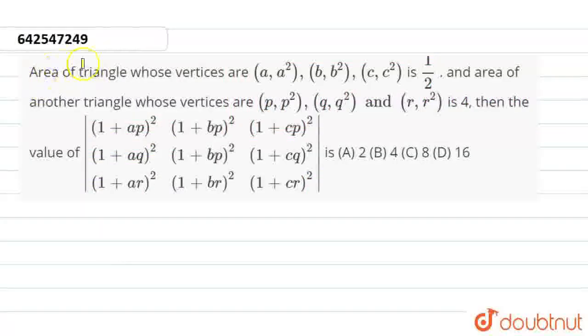So here in question, area of triangle whose vertices are (a, a²), (b, b²), (c, c²) is 1/2. And area of another triangle whose vertices are given as (p, p²), (q, q²), and (r, r²) is 4. Then we have to find out the value of this particular given determinant. And we have 4 options here: first one is 2, 4, 8, and 16.